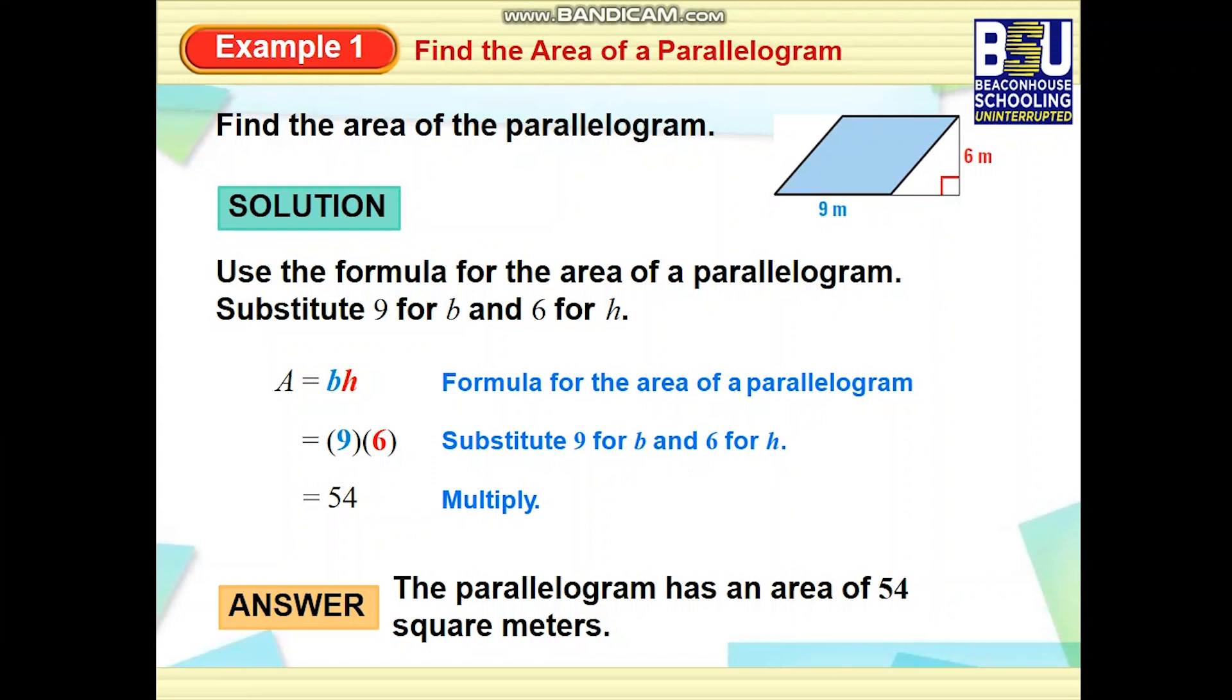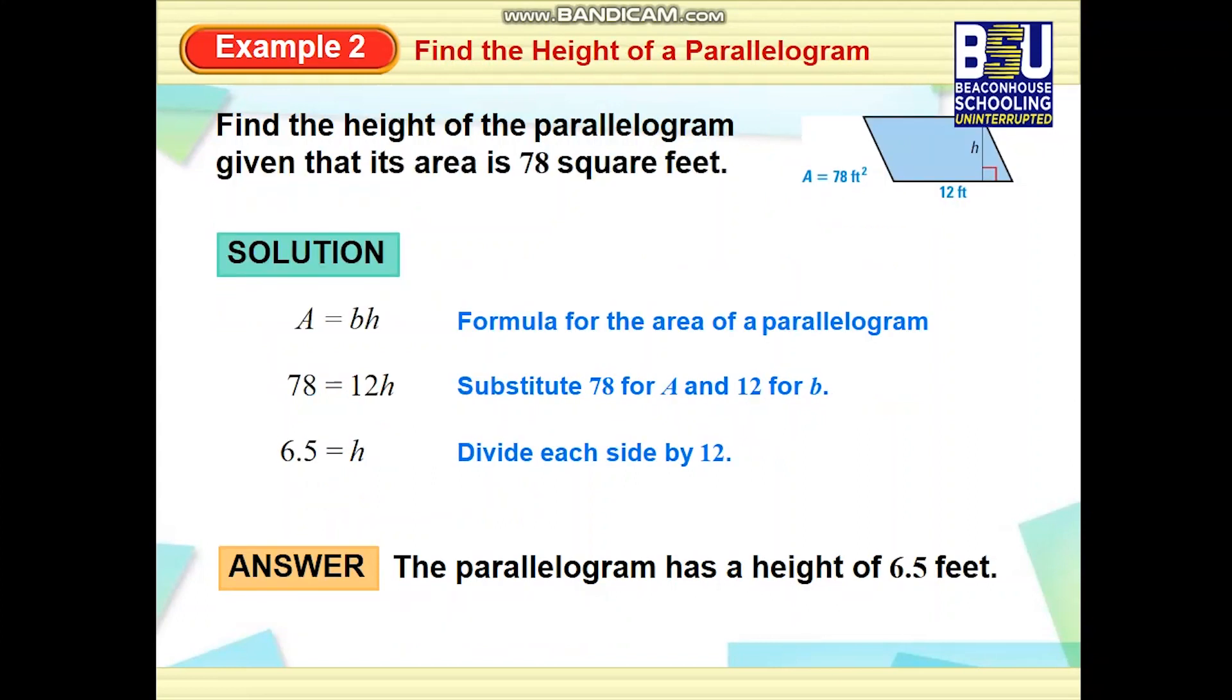Now look at another example. In this example you can see area is given but height is missing. Now students, by applying the same formula you can find out the missing side. Area equals base times height. This time height is missing, so by substituting the values you will get your answer.